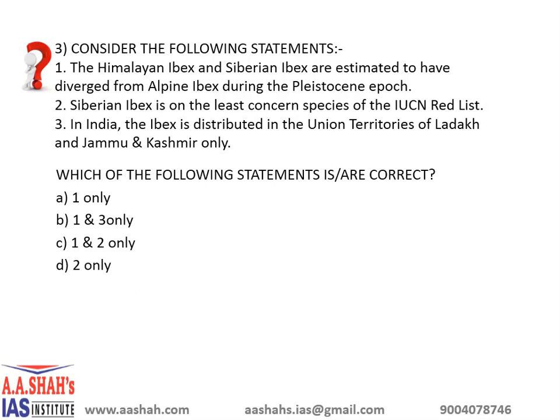The correct answer here is D: 2 only. Statement 1 is incorrect because it is the Siberian ibex which is estimated to have diverged from the Alpine ibex during the Pleistocene epoch, not the Himalayan. Statement 3 is also incorrect because the Himalayan ibex is distributed in the trans-Himalayan range of the Union territory of Ladakh, Jammu and Kashmir, and also Himachal Pradesh up to the Sutlej.